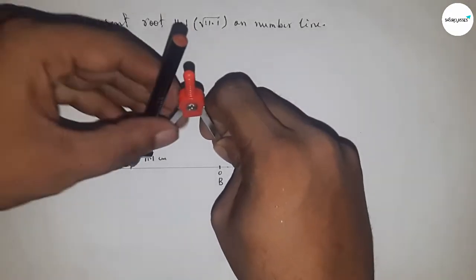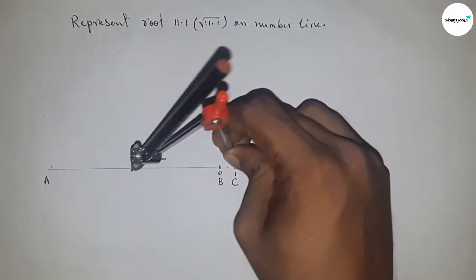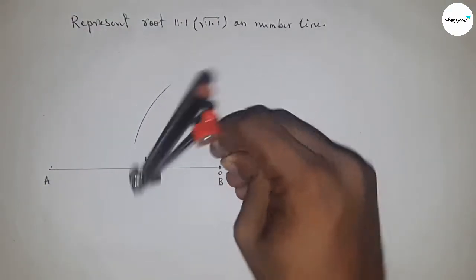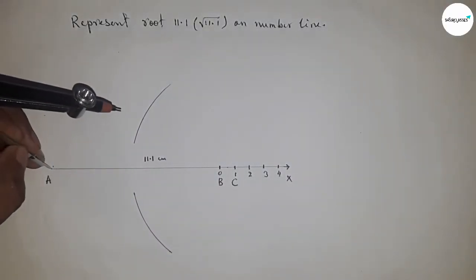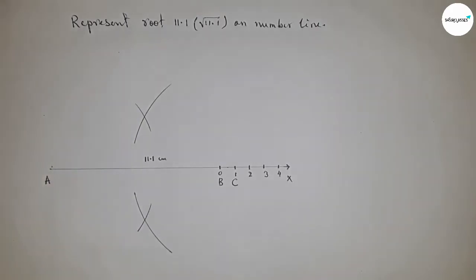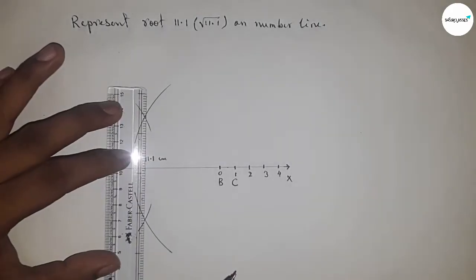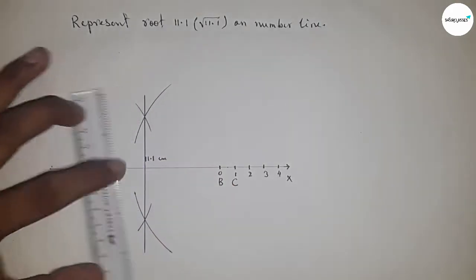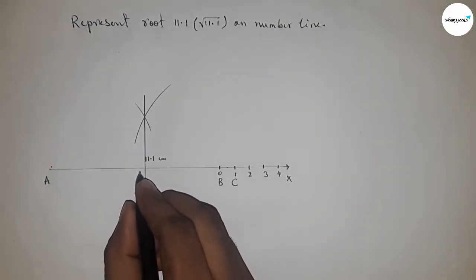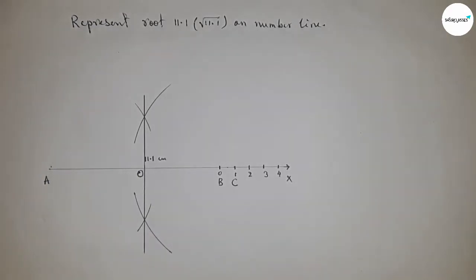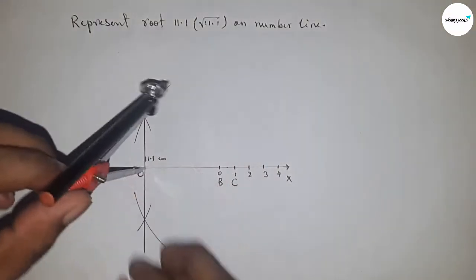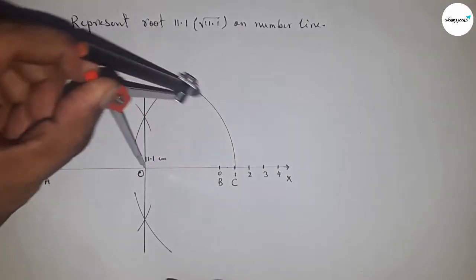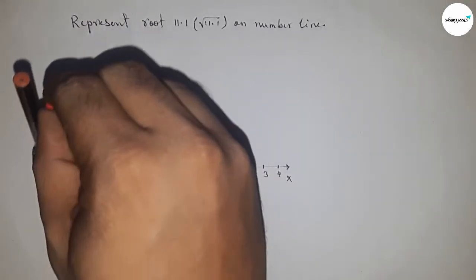Next, select line AC. Taking greater than half of AC, draw an arc here and another arc with the same length here. Place the compass and cut here and cut here. Now join these points, which intersect at point O.